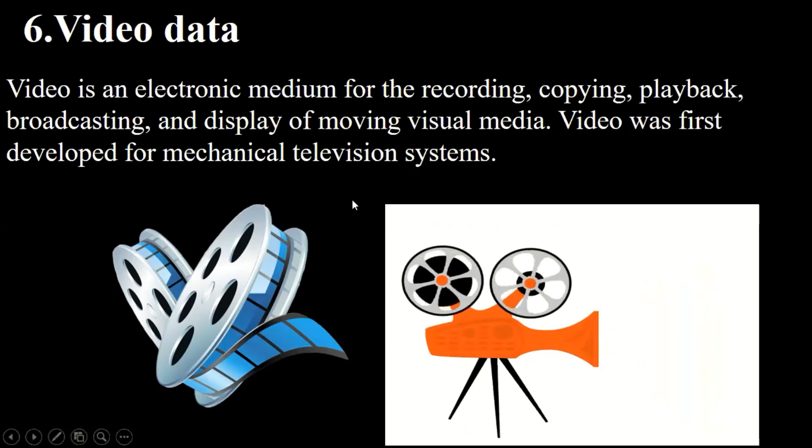So video is very important kind of data these days, and most of the data available on the internet and different websites in form of video. So video is very popular kind of data in computer, and videos are a kind of moving images that have sound. So these are called video data.